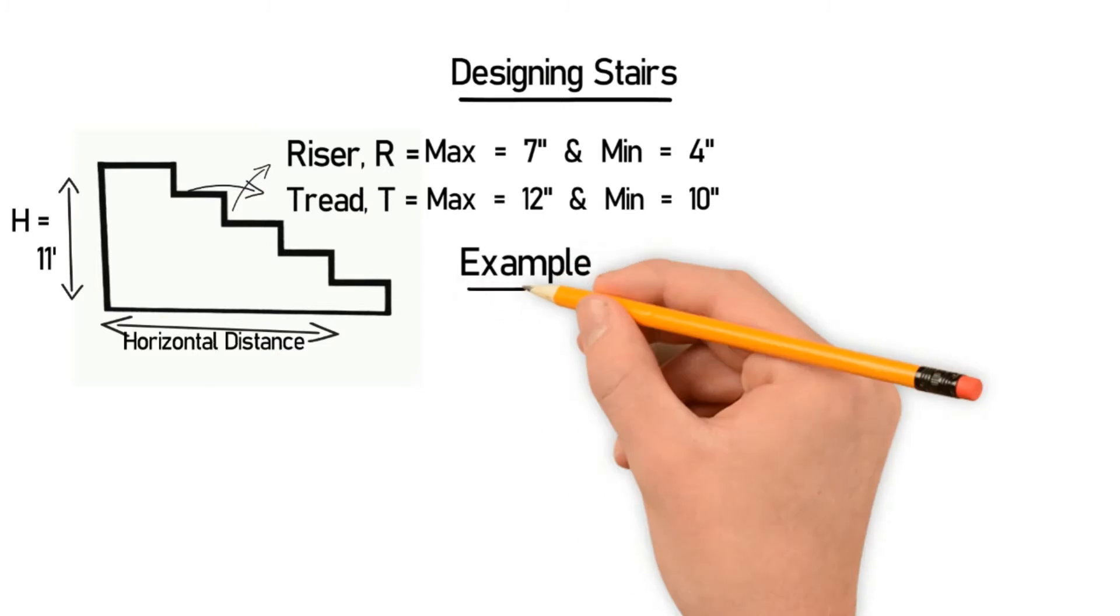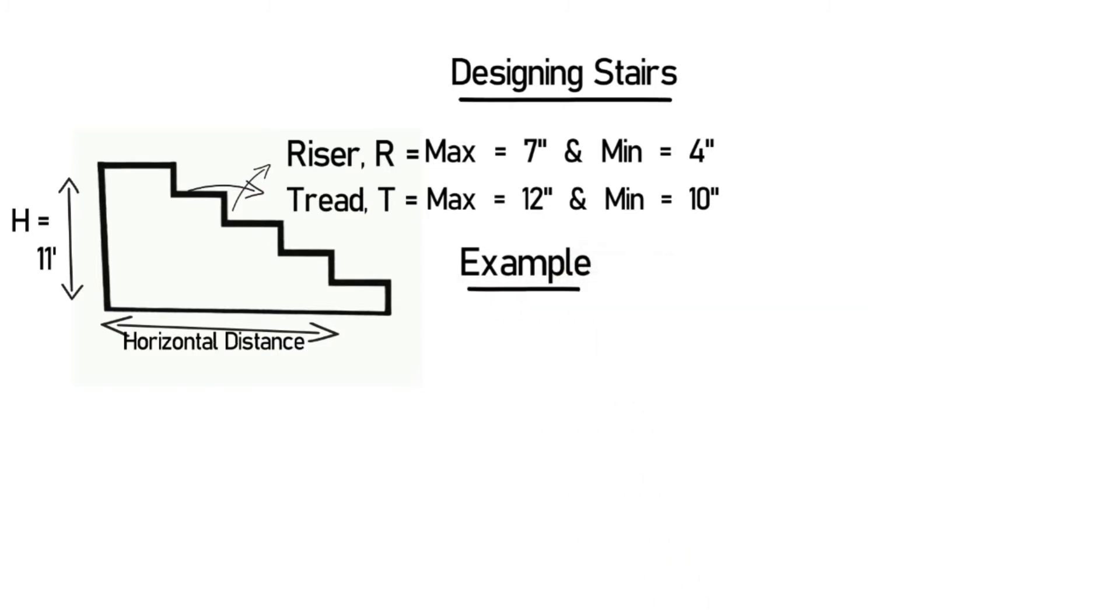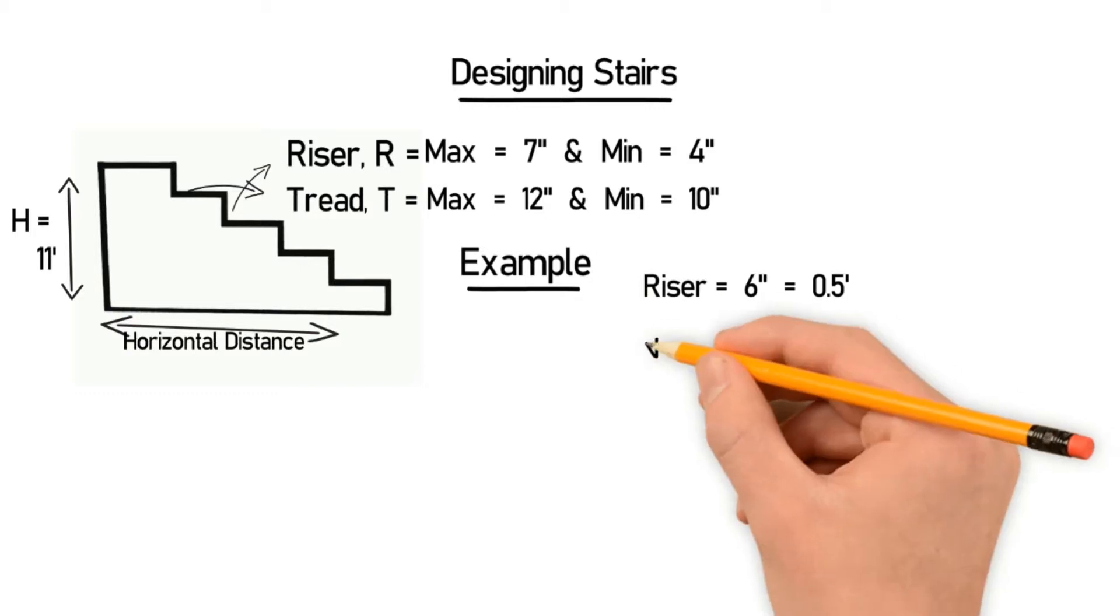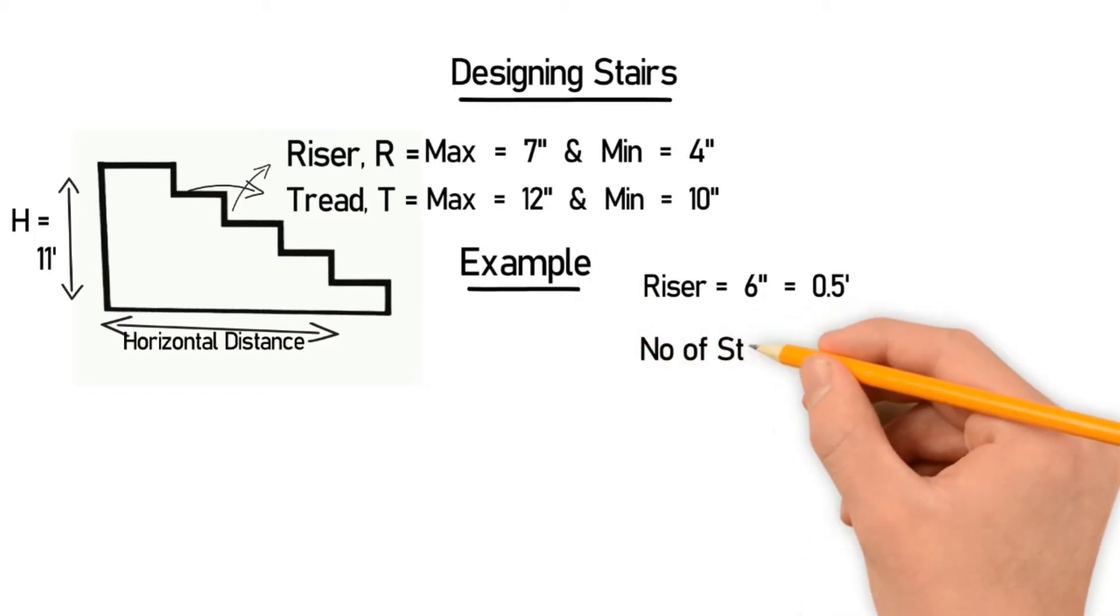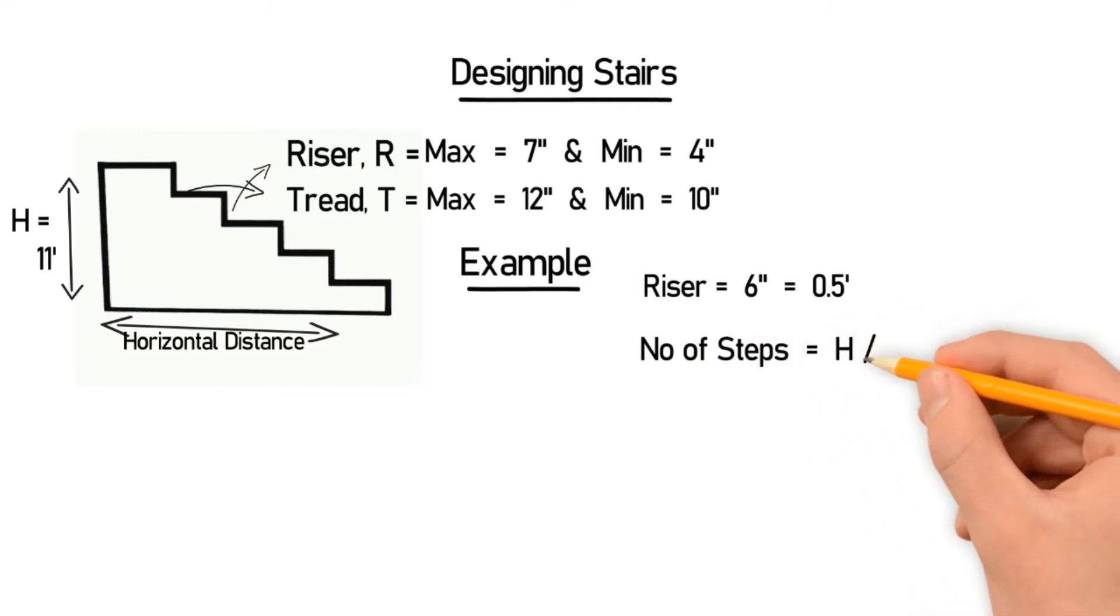Let's take the example of a riser equal to 6 inches. Convert it into feet and you will get 0.5 feet. So the number of steps can be calculated using the formula: number of steps is equal to H divided by R. H is the height and R is the riser.